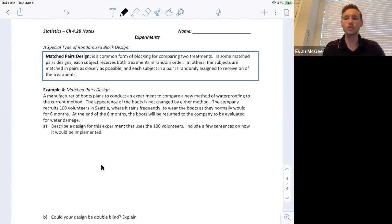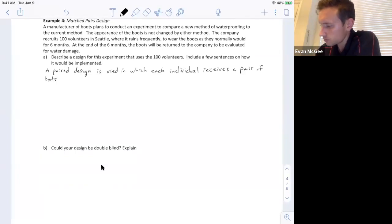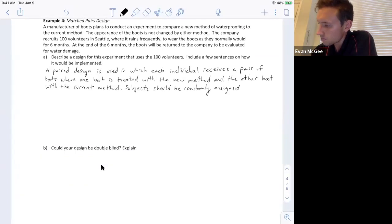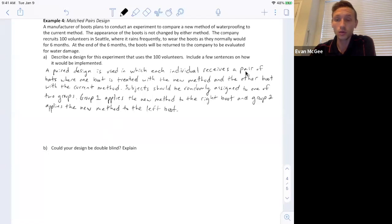So let me write out the important aspects of this design and then we'll talk a little more about it. So again, each individual is treated as a block and they receive a pair of boots where one is treated with the new method, one is treated with the old method, but there still is an important part for randomness. We have to make sure that they're randomly assigned to one of two groups. This is one way we could do it. We randomly assign them to one of two groups where group one applies the method, the new method, to their right boot and then group two applies the new method to their left boot.